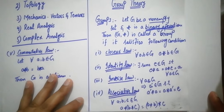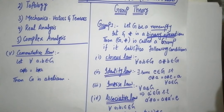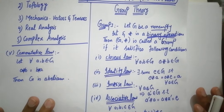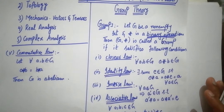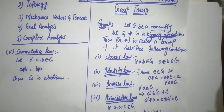How do these 4 laws hold? The Closure Law means you take two elements and operate on them, and the answer should also be in that set. The Identity Law means there exists an identity element in the set. The identity element is the element that keeps the identity of each element — we call it the identity element. Each element operates with the identity and gives back the same element on the left and right.